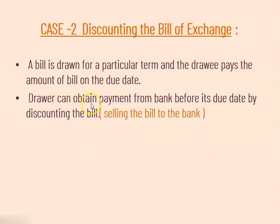What does it mean that drawee can obtain payment from bank? For example, if the drawer has drawn the bill for 2 months period, but the drawee is in need of money, in that case drawee will just go to the bank and sell this bill to the bank — that is, selling the bill to the bank. So discounting here means selling the bill to the bank.